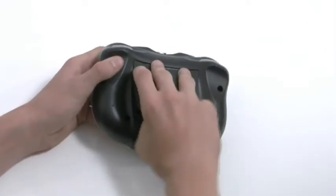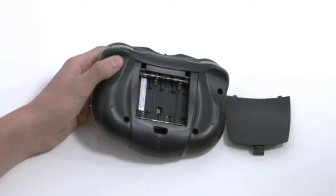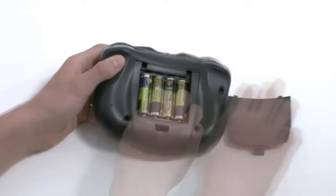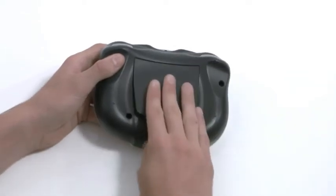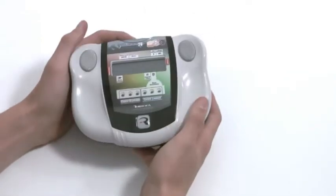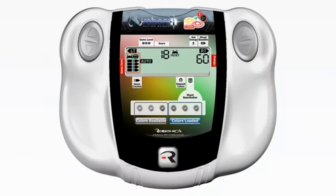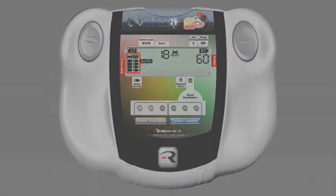Follow the same procedure to install the remote control batteries and switch on the remote control. The remote control's LCD and LED lights will light up. The robot and remote control's battery levels are shown on the LCD display.